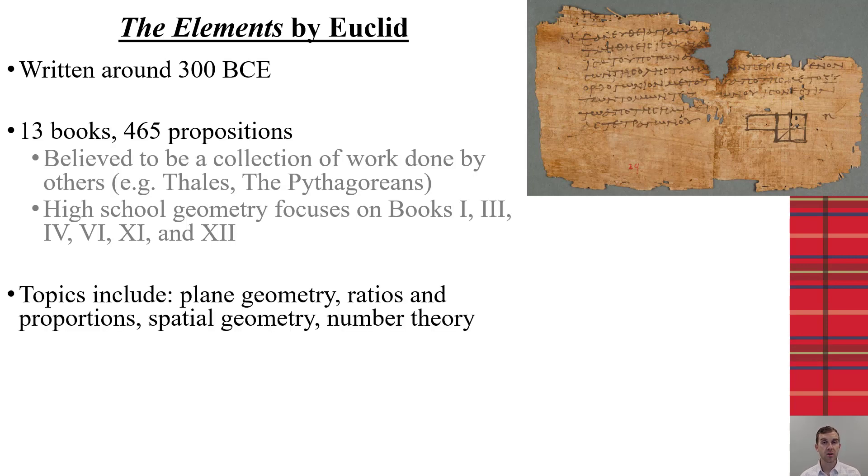It included, though, not just plain geometry, but also many different numerical concepts, such as number theory and ratio and proportions, irrational numbers, quadratics. And it's also one of the things that he constructed for sure that we know is the Euclidean algorithm.